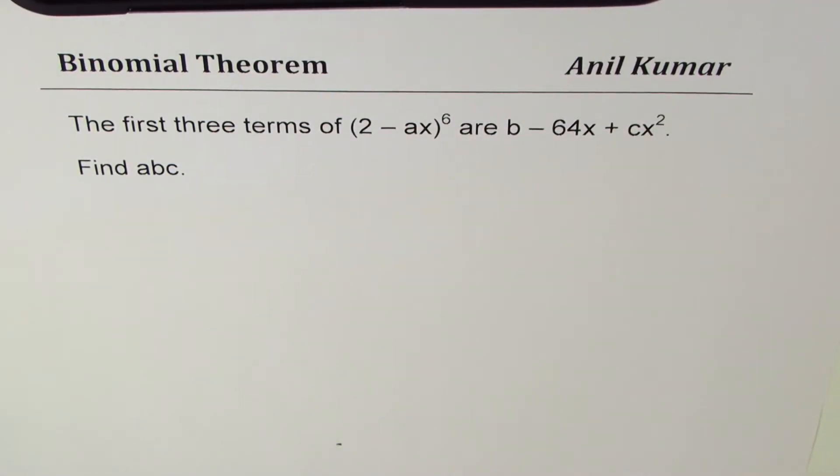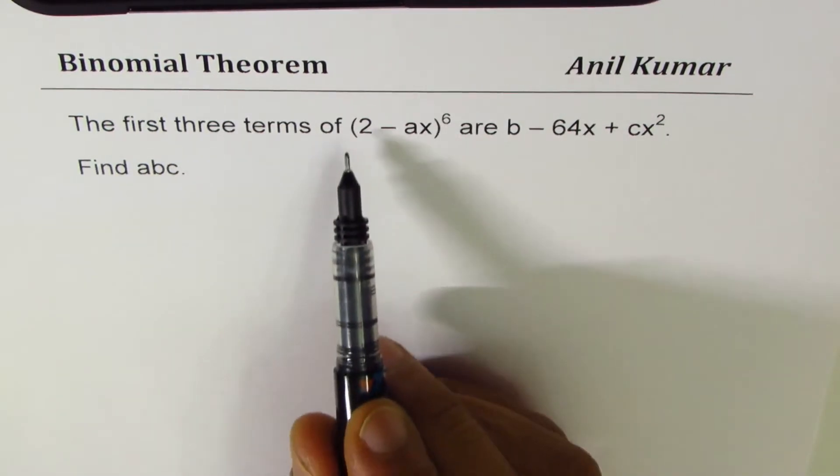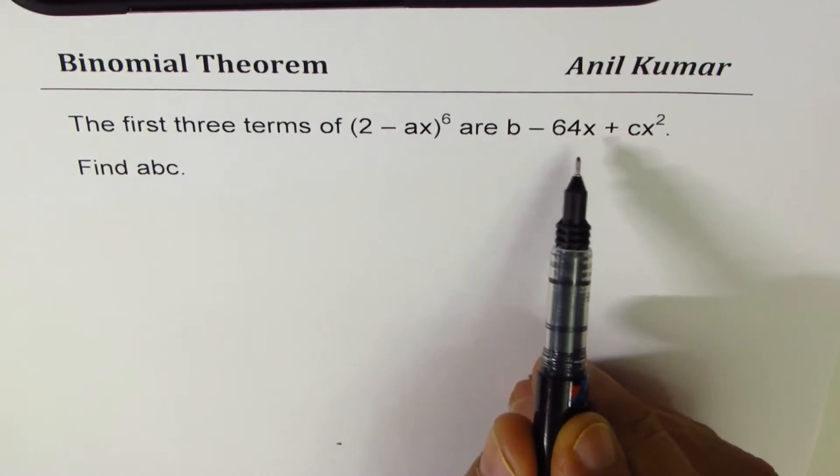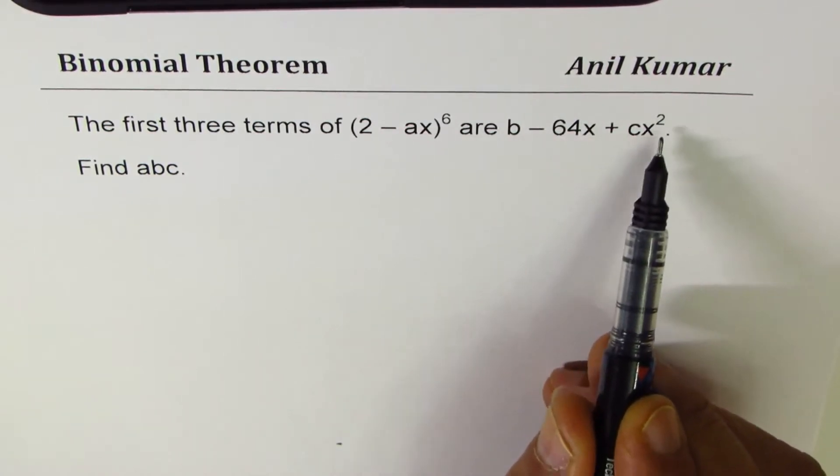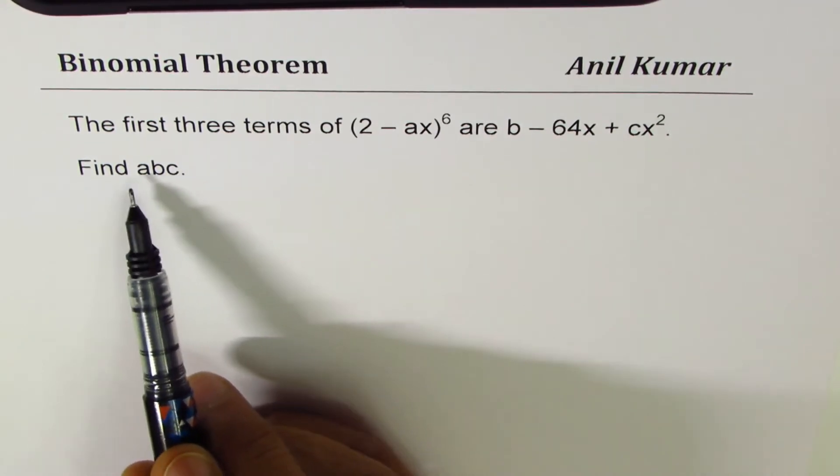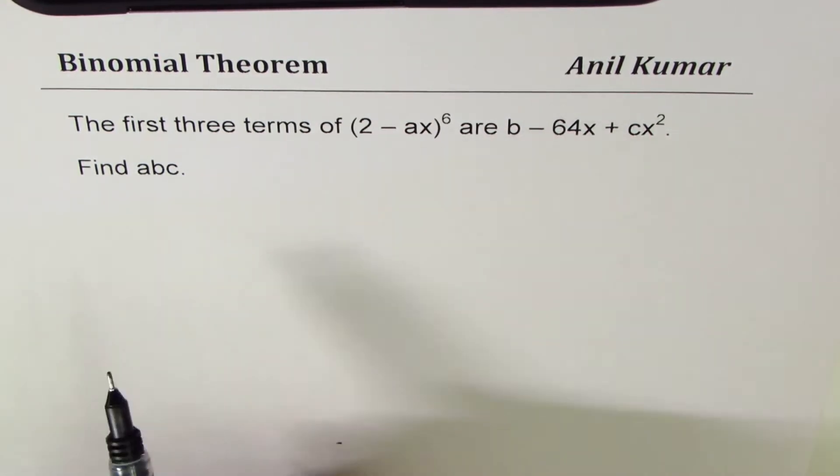I'm Anil Kumar, welcome to my series on binomial theorem. This is a very interesting test question and I hope you will benefit from this particular video. The question is: the first three terms of (2 - ax)^6 are b - 64x + cx^2. Find abc. When I say find abc, I mean the product of three.